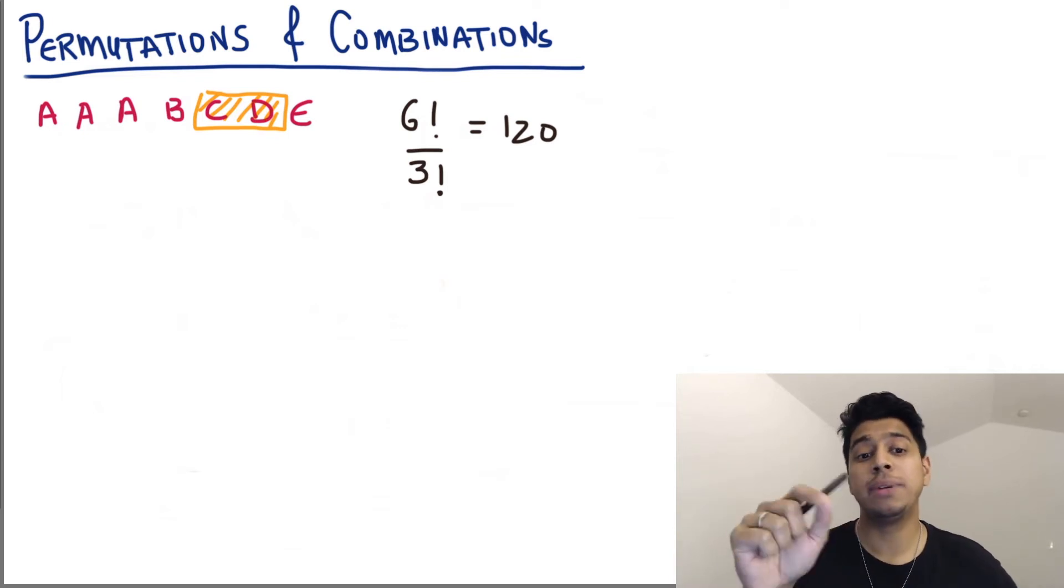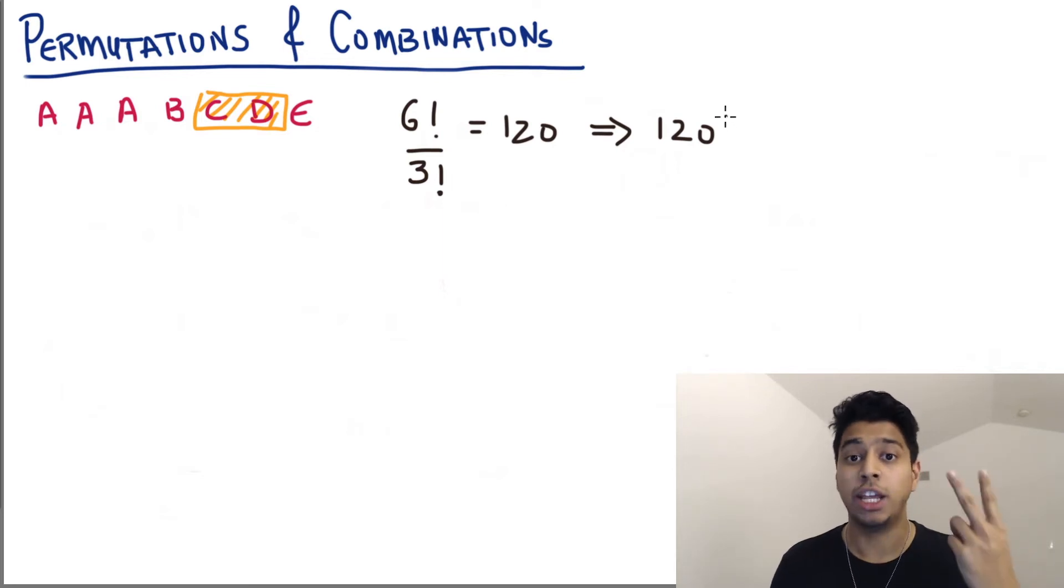So for this arrangement specifically, you could have A, A, A, B, D, C, E, if you just switch the things inside the box. So now what you're going to do is you're going to change the formula a little bit. And you're just going to multiply this by how many things are in the box? Two, they're unique things. And how many ways can you arrange two unique things? Two factorial. So 120 into two factorial, that's two. So 120 into two is 240. And this is the right answer.